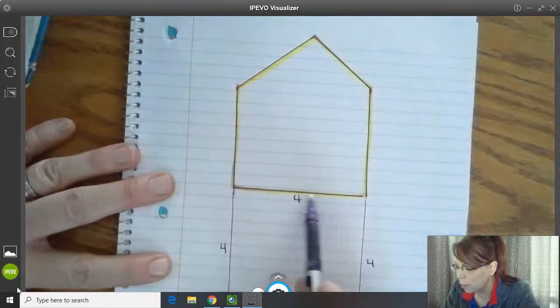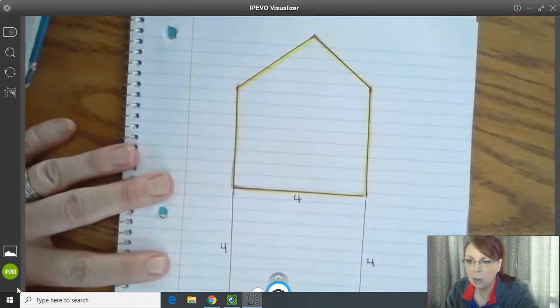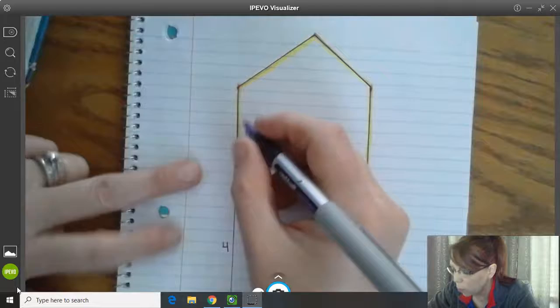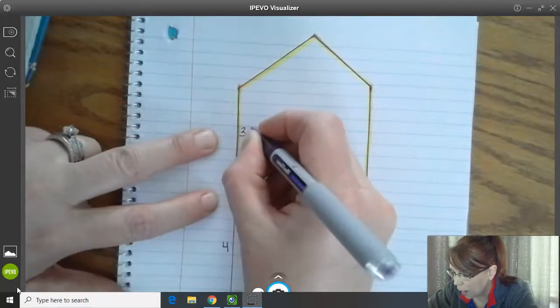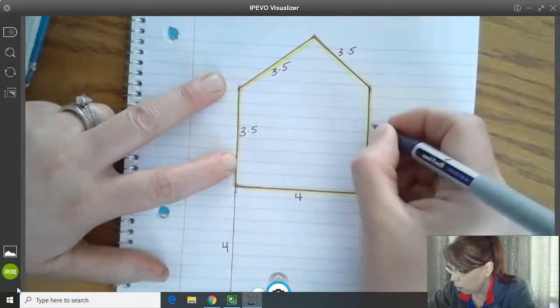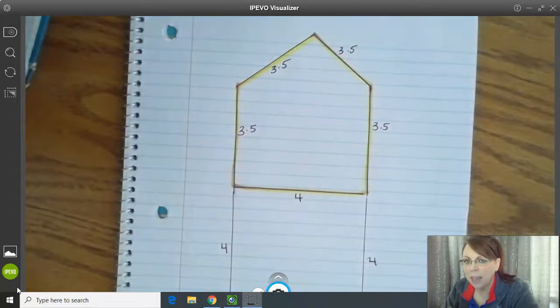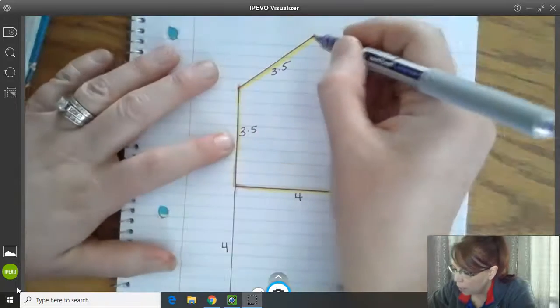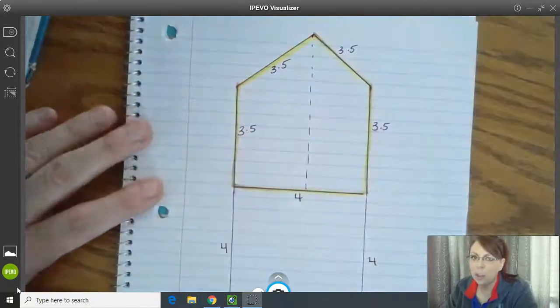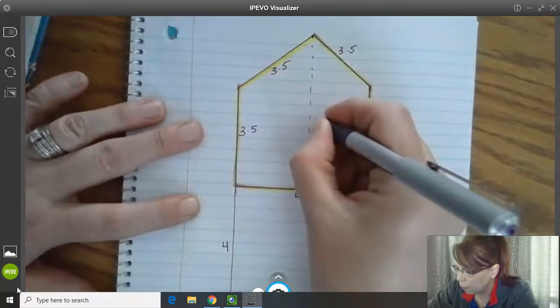Well, we know that the one side that measures four is the base that it sits on because that also shares a side with that square that had all four congruent sides measuring four. So that means that this side is 3.5, and all the other ones are 3.5, right? And then the final measurement that it gave us was that the height of the pentagon from the base to the point was 5.